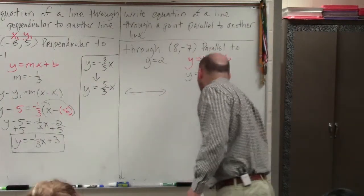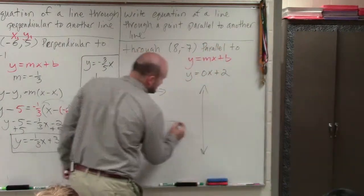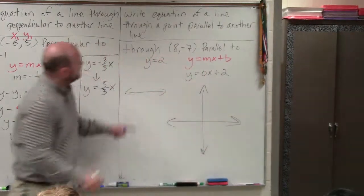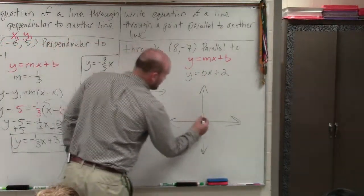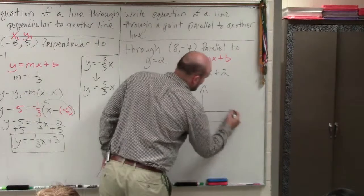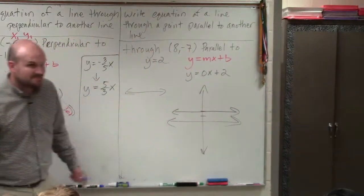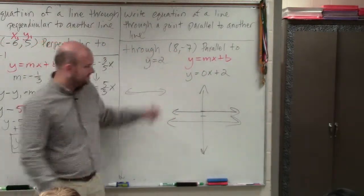Now, rather than doing the algebra, I'm going to try to make this make sense algebraically. We know the line is at y equals 2. It's a horizontal line. We know our new line also has to be horizontal, but it has to go through the point 8, negative 7.